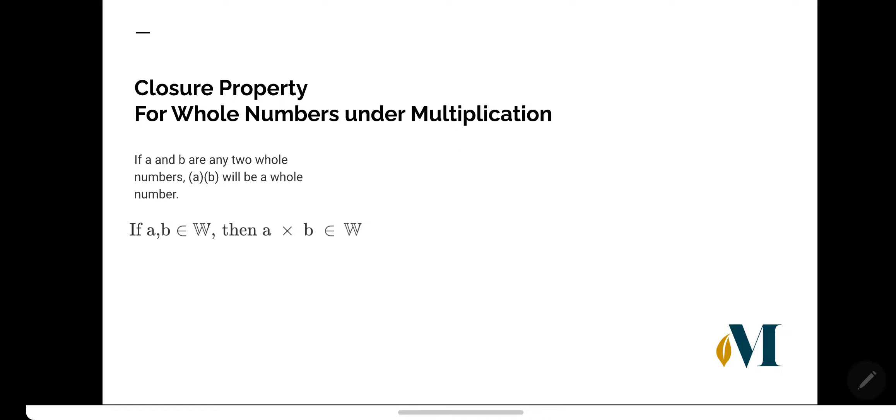The closure property for whole numbers under multiplication states that if a and b are two whole numbers that are elements of the set of whole numbers, then the product a × b will be a whole number. The product will also be in the set of whole numbers.